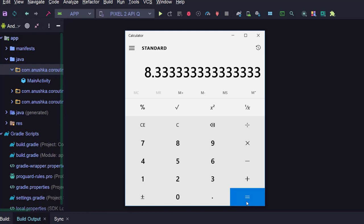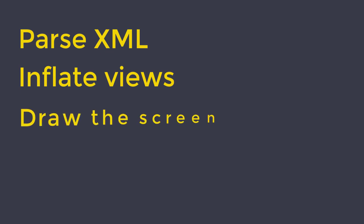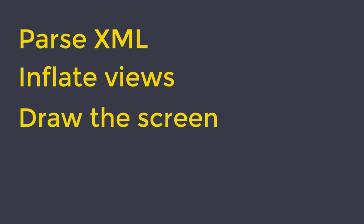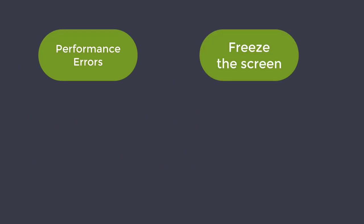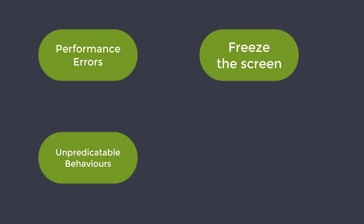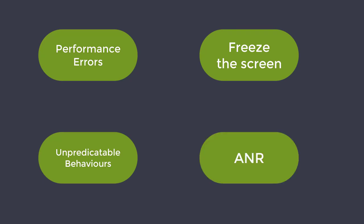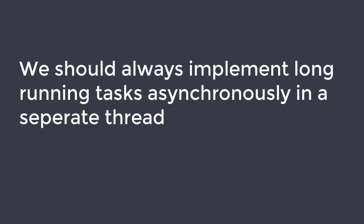By default, the Android main thread has a set of regular responsibilities. It has to parse XML, inflate view components and draw them again and again for every refresh. The main thread also has to deal with user interactions such as click events. So if we add more tasks to the main thread and its execution time exceeds this super small time gap between two refreshes, the app will show performance errors. The screen might freeze, users will see unpredictable behaviors in view components, and it can even cause an Application Not Responding error.